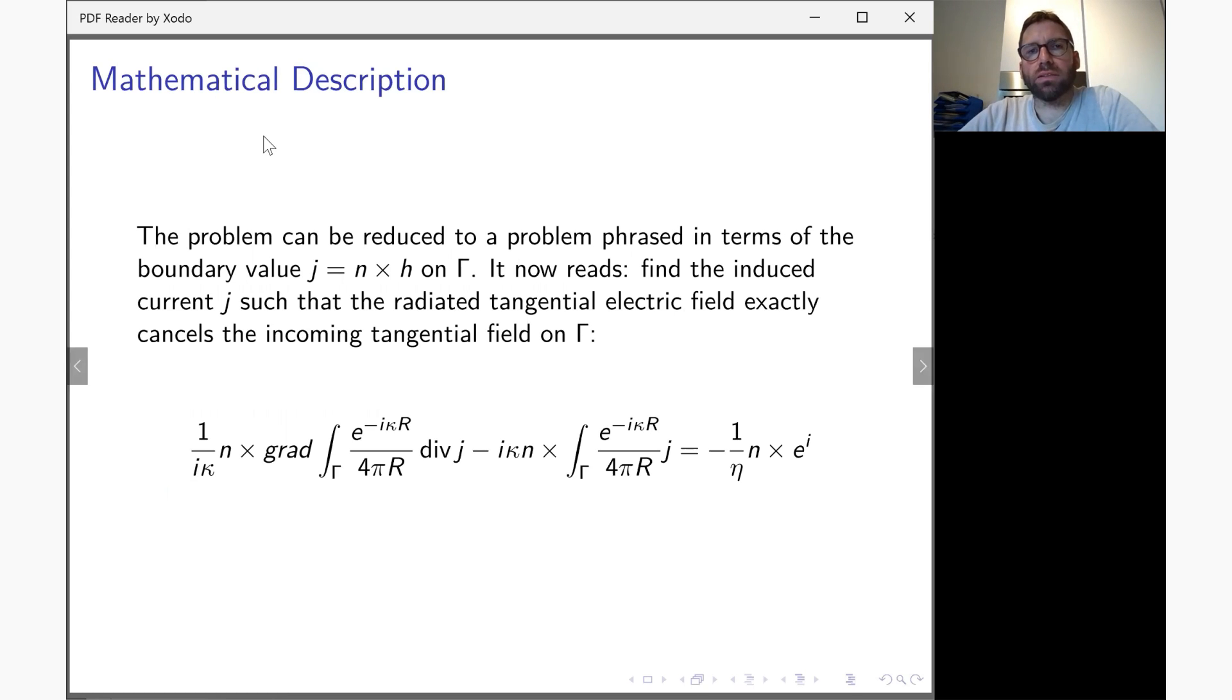The mathematical description is done by reducing the boundary value problem to the boundary of the domain. Then you end up with an integral equation that is phrased in terms of the induced current j, which is also the boundary value, the tangential boundary value of the magnetic fields n cross H on the surface gamma of the scatterer, of the obstacle from which your wave scatters away.